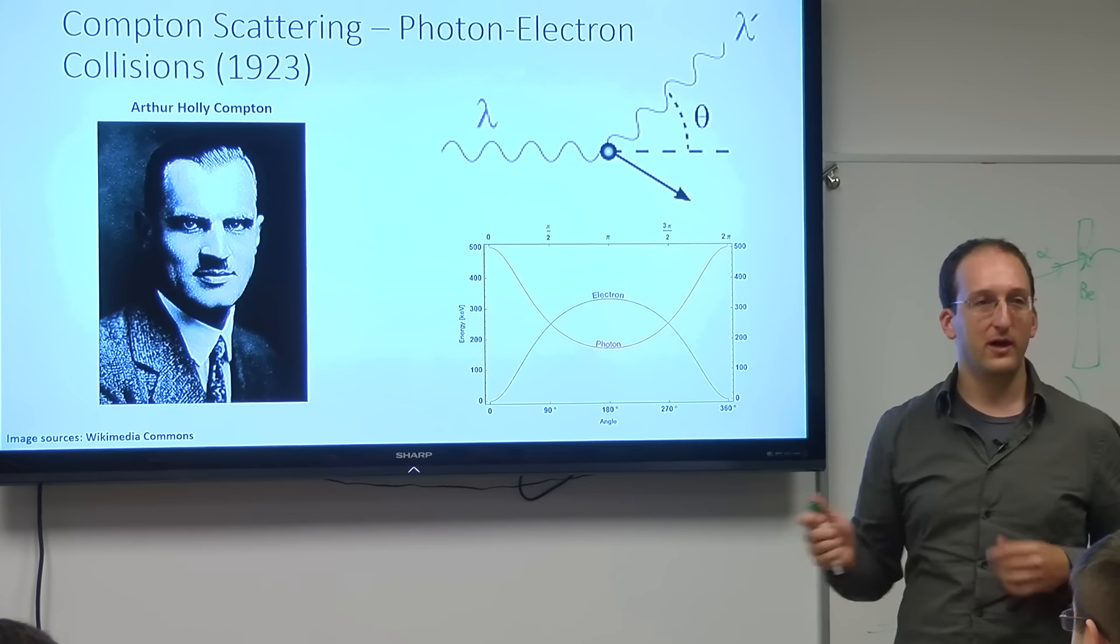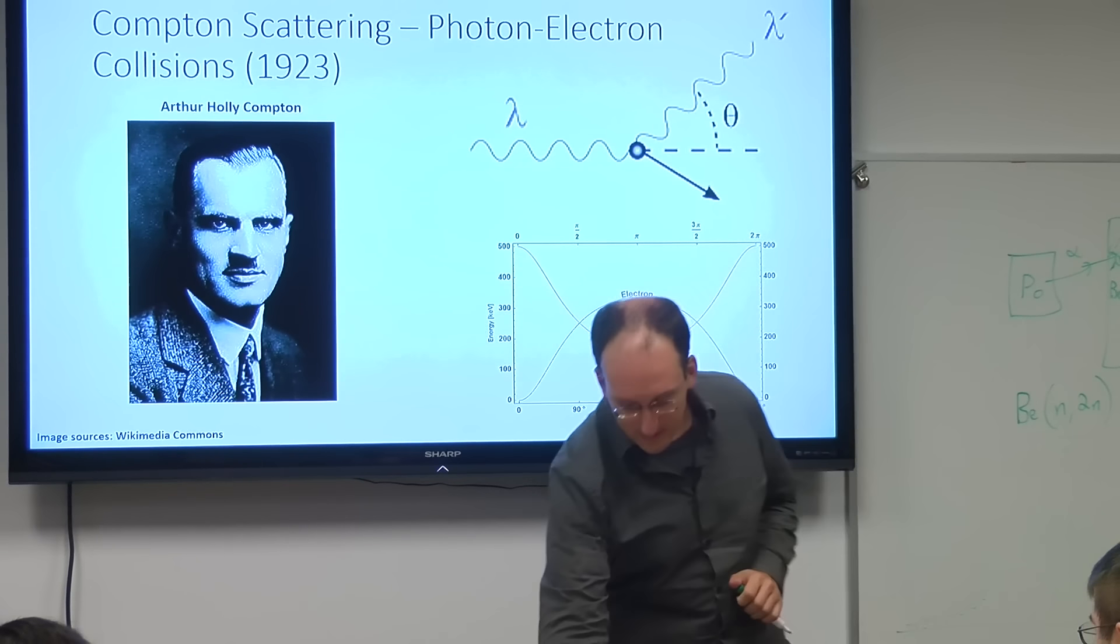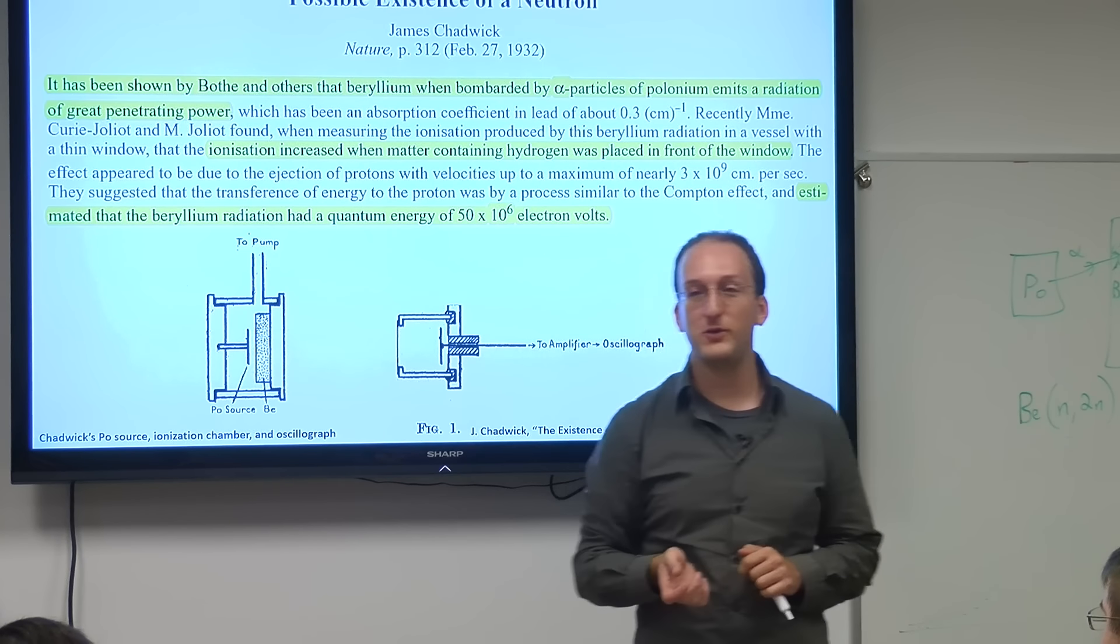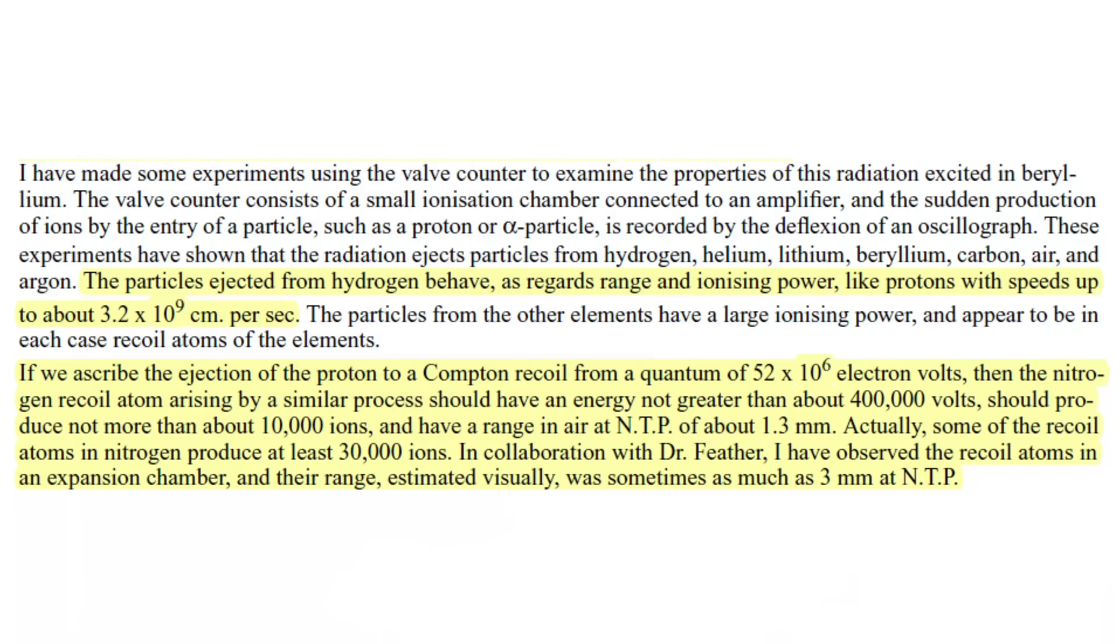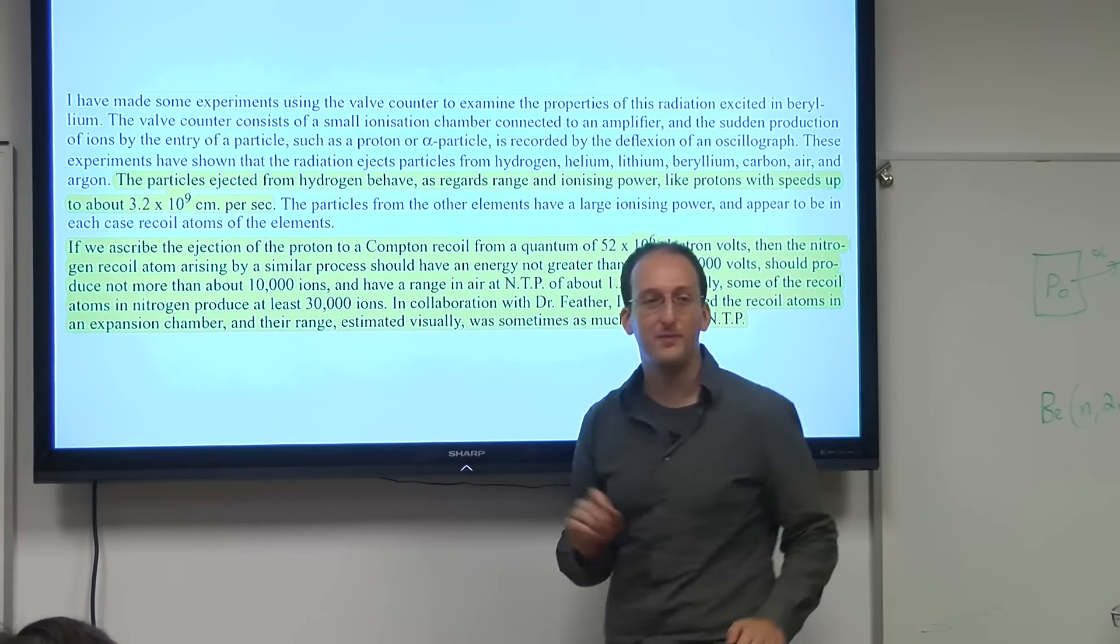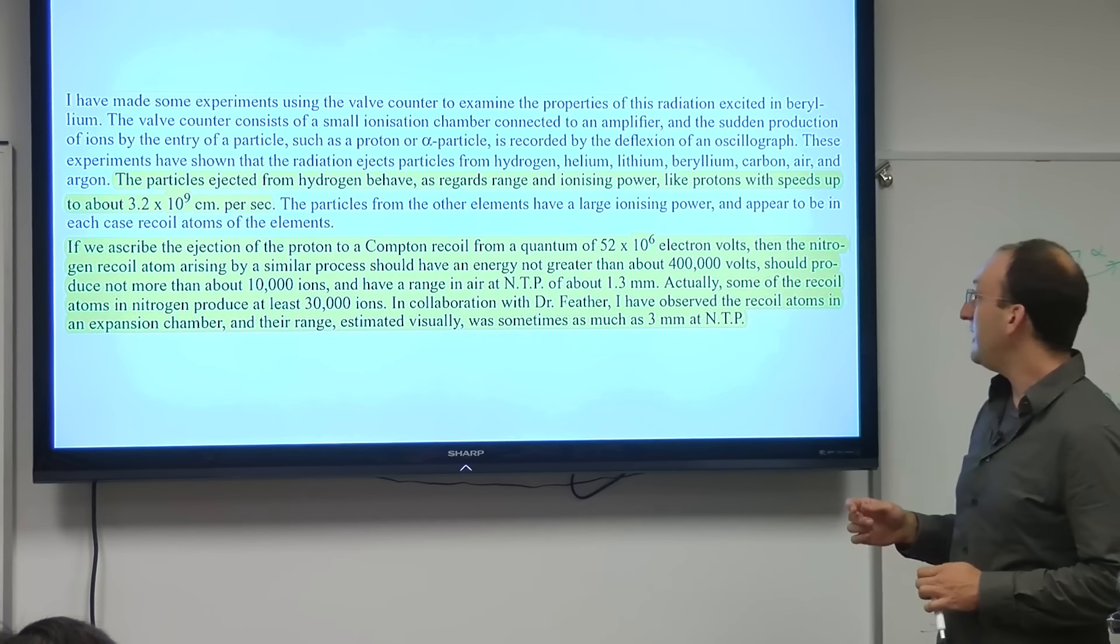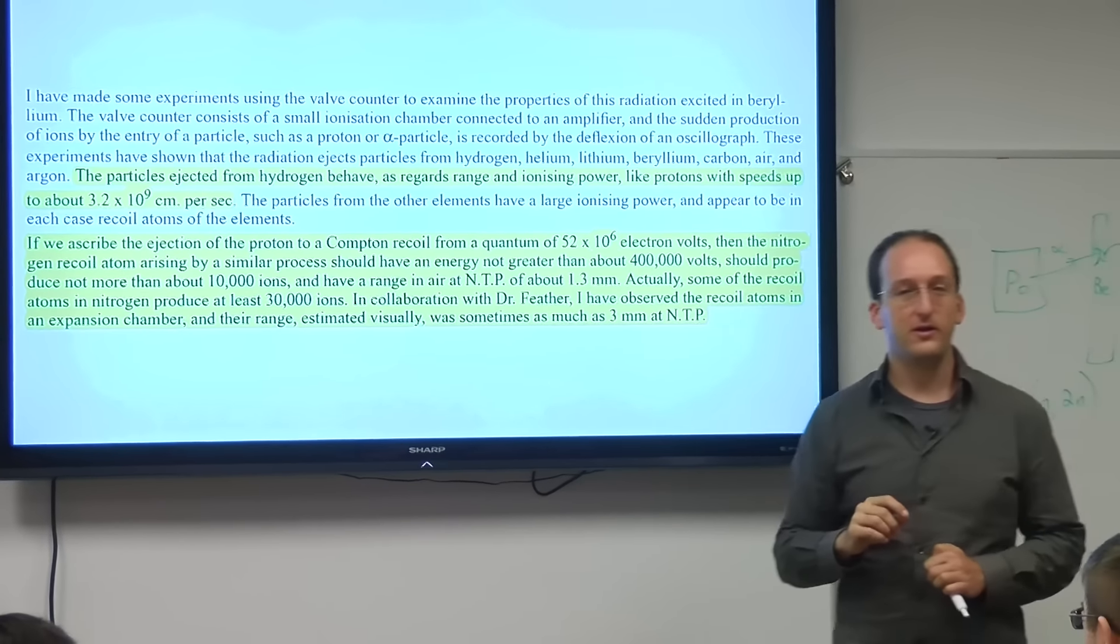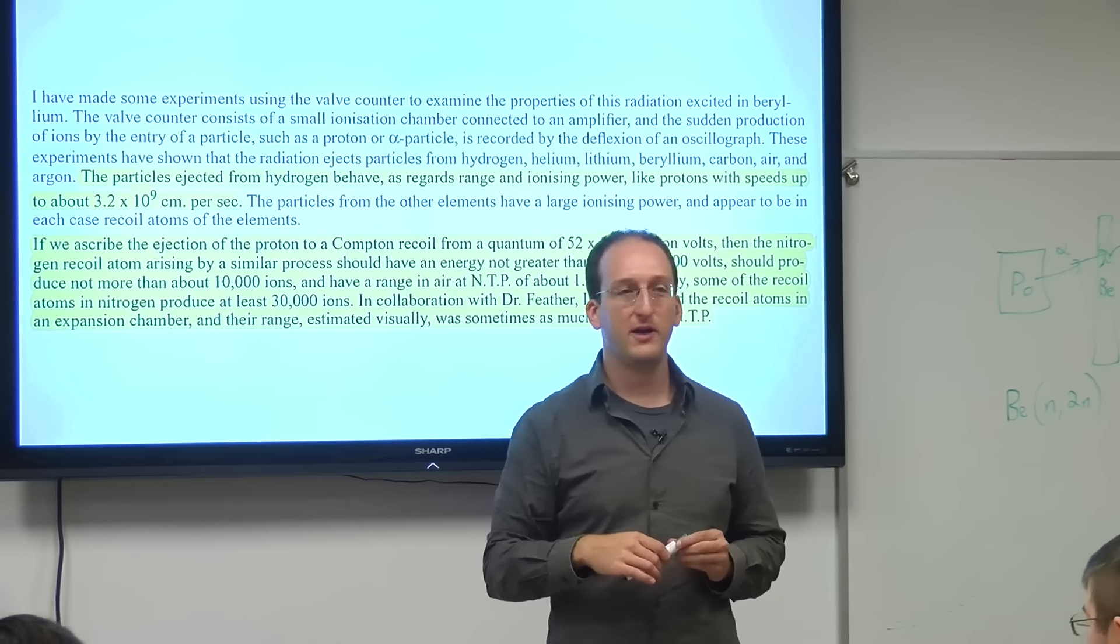This is an actual picture from the paper: a simple polonium source on a disk, a piece of beryllium, a vacuum chamber—because it was known that alpha particles have extremely short range. Without that vacuum, the alpha particles wouldn't make it to the beryllium. What wasn't known was why are we getting so many ionizations? They attributed it to a process similar to the Compton effect.